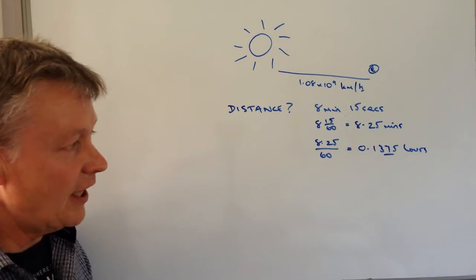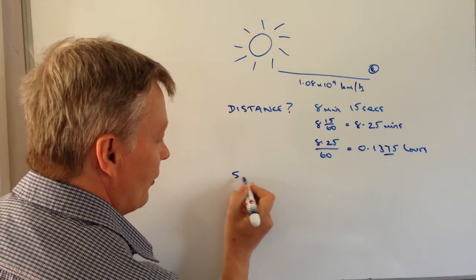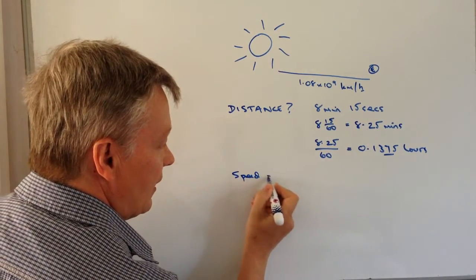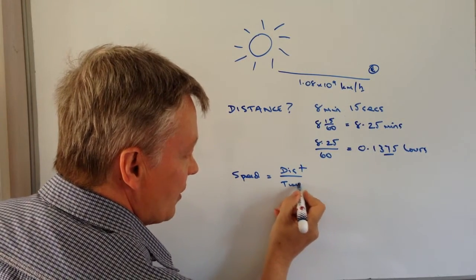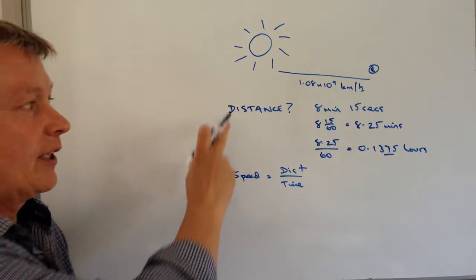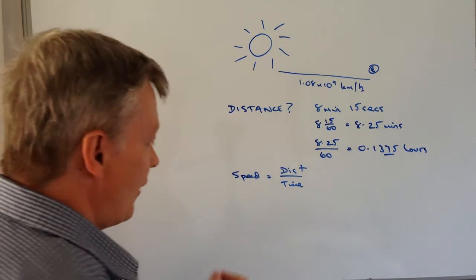And then it's just a case of using speed, distance and time. You'll remember that speed equals distance divided by time. So if we want to work out the distance, we've got speed and we've got time, so we're going to multiply those together.